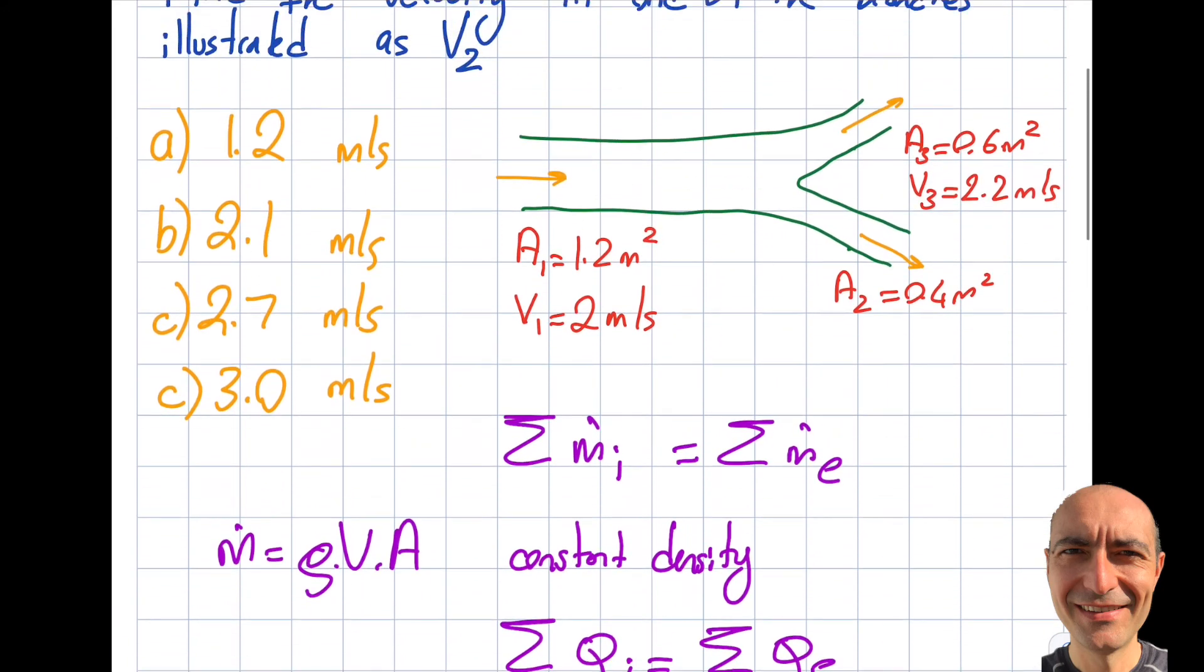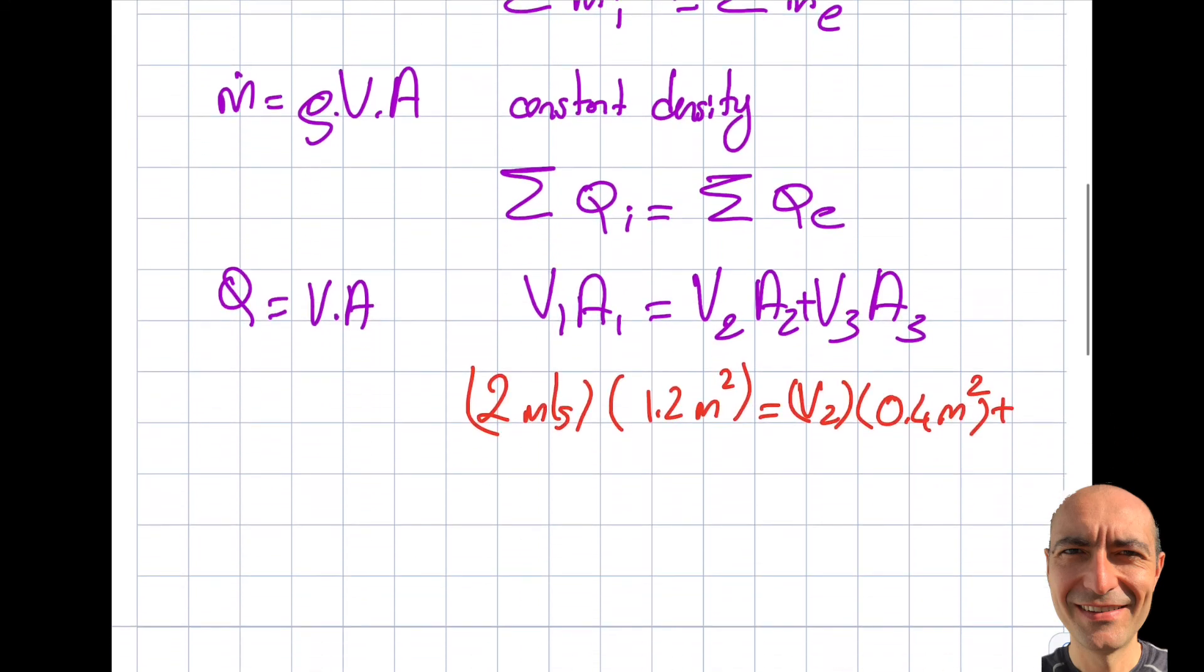Let's go up, I forgot 0.6. 2.2 meters per second times 0.6 meters squared.